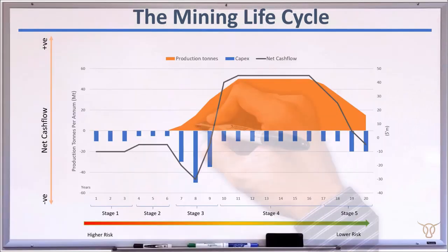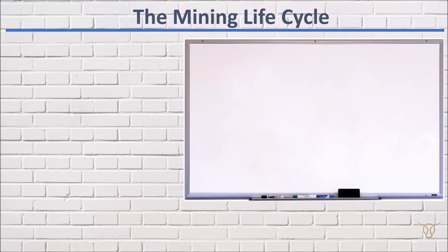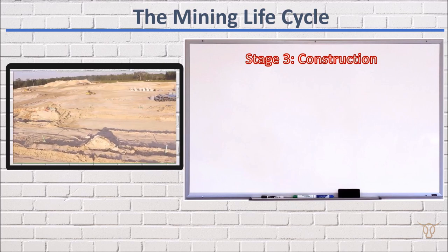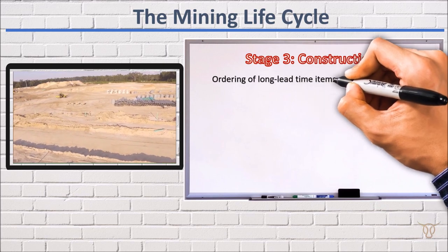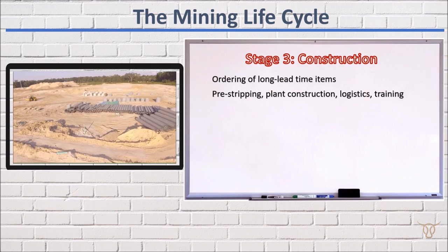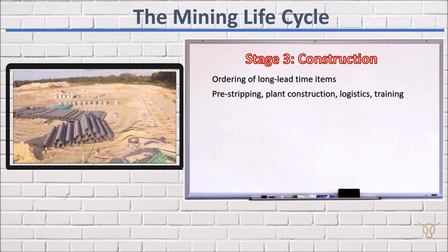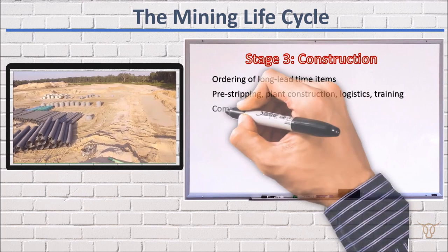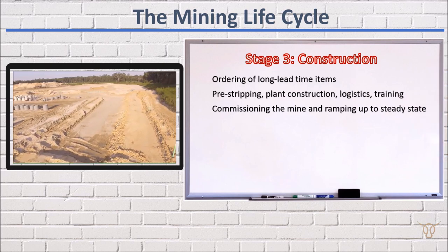Stage 3: Construction. This stage deals with a whole host of activities required to bring the mine into production, starting with the ordering of long lead time items, pre-stripping, plant construction, putting in place necessary logistical facilities such as roads, training staff, and finally commissioning the mine and ramping up production to steady state levels. Sponsors would use the debt and equity funding received in Stage 2 to construct the mine and ramp up to steady state production.